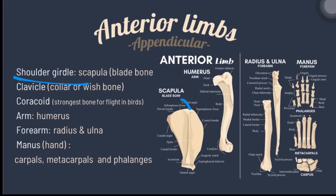For the shoulder girdle, it is also called the scapula, or blade bow, or blade bone. The clavicle, or collarbone, is only found in cats. This can be mistaken for a bone in the esophagus. The fused clavicle are called furcula, or wishbone.